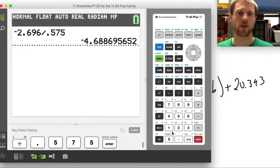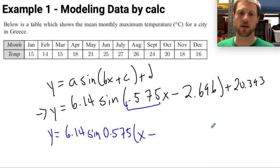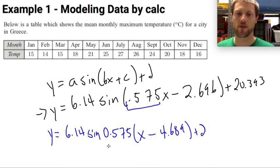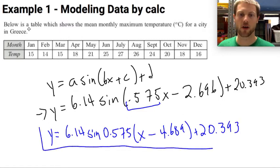And so let's round this out to negative 4.689. And then the D value is the same, plus 20.393. All right. So this is my calculated equation.